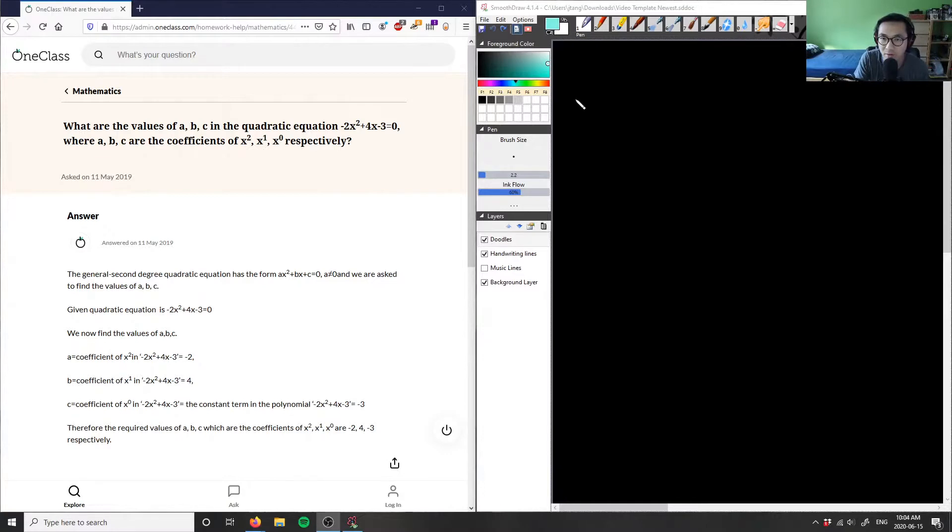So, this here is question 1, and we have this quadratic equation: negative 2x squared plus 4x minus 3 equals 0. What they want to know is the values of a, b, c in the quadratic equation based off the coefficients of x squared, x to the power of 1, and x to the power of 0.